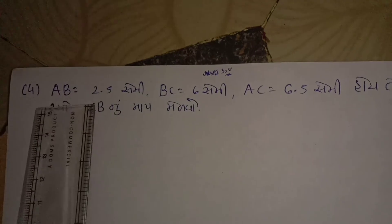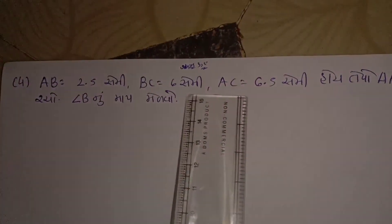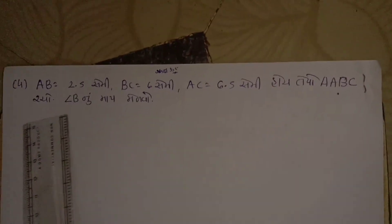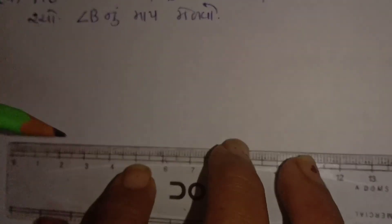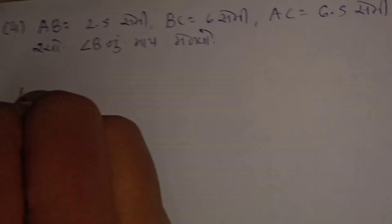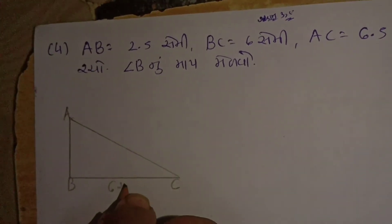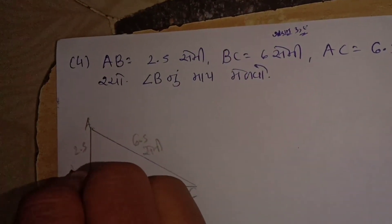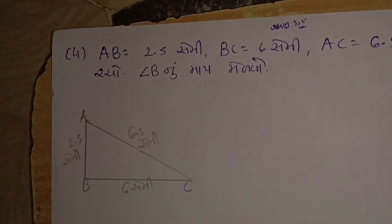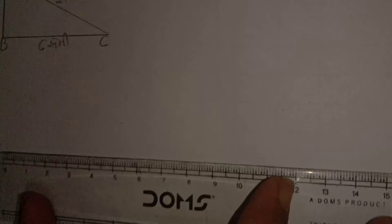ચોથો પ્રશ્ન: AB = 2.5 સેમી, BC = 6 સેમી, AC = 6.5 સેમી હોય તેવો ત્રિકોણ ABC રચો અને કોણ B નું માપ મેળવો. તો સૌ પ્રથમ આપણે કાચી આકૃતિ ડ્રો કરીએ છીએ. હવે 6 સેન્ટિ મીટર નો BC રેખાખંડ દોરીએ છીએ.